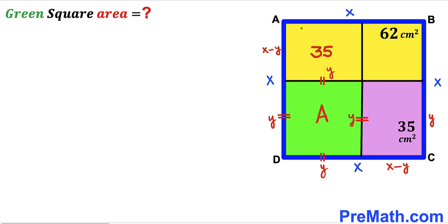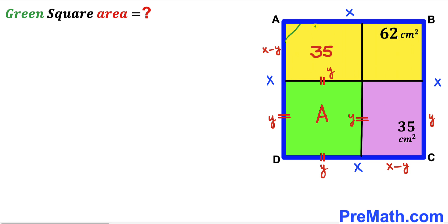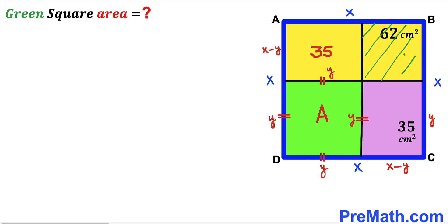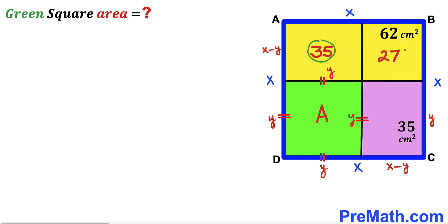Now let's make another observation. We know the area of the whole yellow rectangle is 62, and the area of the small rectangle within it is 35. So the area of the remaining rectangle has got to be 62 minus 35, which gives us 27 centimeter square. So one rectangle is 35 and the other is 27.